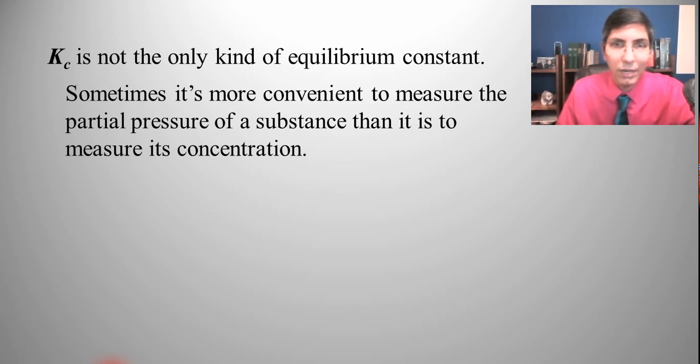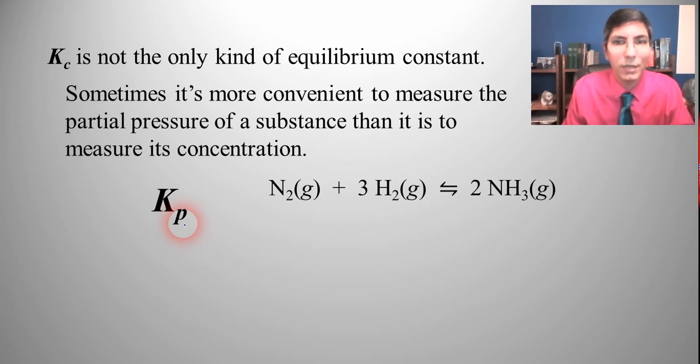Now when we talk about equilibrium constants it is important to realize that even though we've been using Kc it's not the only one that you can talk about. Sometimes it's actually more convenient to measure the partial pressure of a substance than it is to measure its concentration, especially if we're talking about gases. And so we have this other type of equilibrium constant called Kp. And so if the C in Kc stood for concentration I bet you can figure out what the P stands for in Kp. It's pressure, right, because it's an equilibrium constant in terms of pressure.